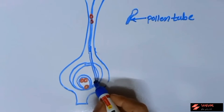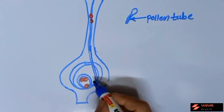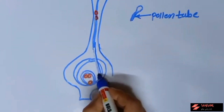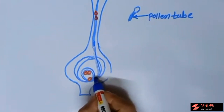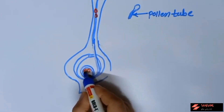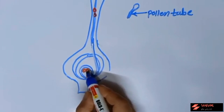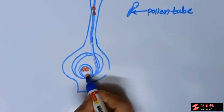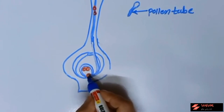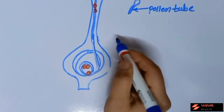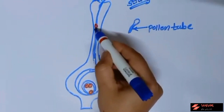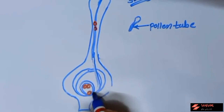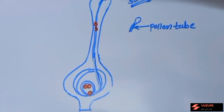Inside the embryo sac, there are ovules. Inside the ovules, two things are present: one is the egg cell, which is the female gamete, and another is two haploid polar cells. So two haploid polar cells and one egg cell are present in each ovule. The pollen tube travels through the style and reaches the ovary, entering the embryo sac.